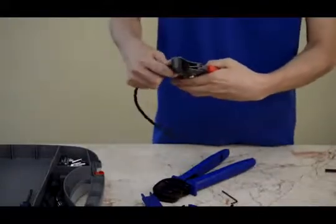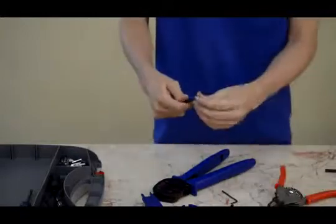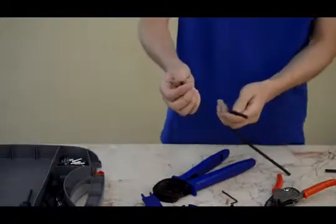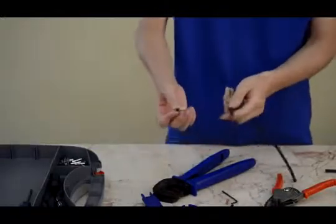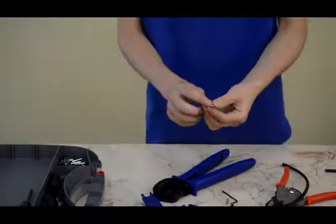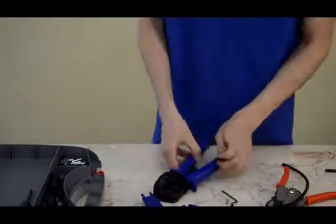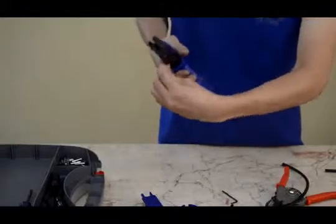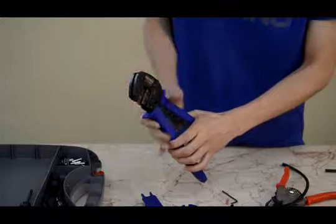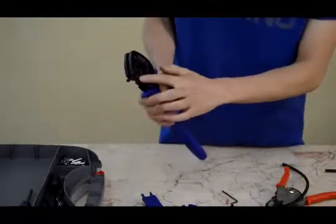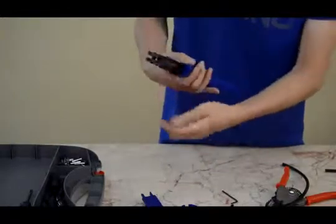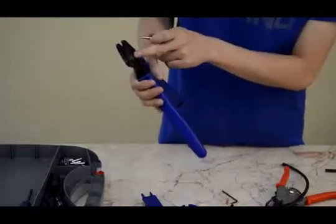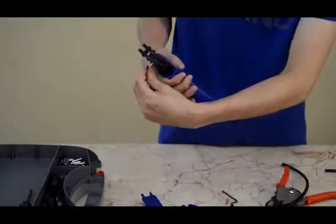Strip the cable. Select MC3 solar connectors. This is 2.5 square millimeters. Put the solar connector on the right way. This is 2.5 on three sides.